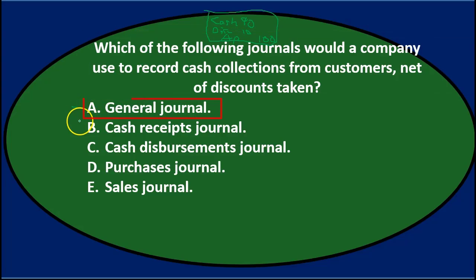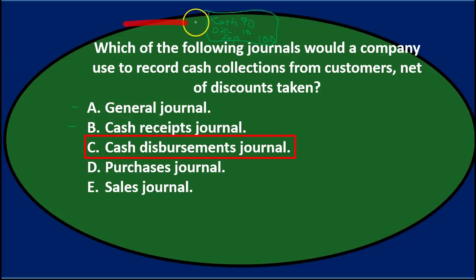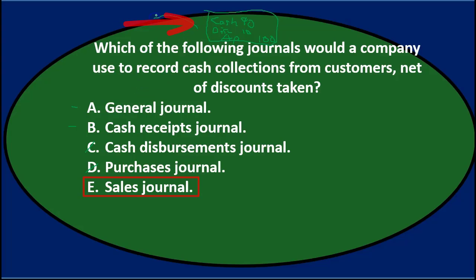A) the general journal — the default if it can't go anywhere else, so I'll keep it for now. B) cash receipts journal — we did receive cash, so that could be the place. C) cash disbursements journal — we didn't disburse cash, we received it, so that's out. D) purchases journal — we're not purchasing, we're getting paid. E) sales journal — the original sale happened prior to this; we're collecting on that prior sale, so it's not that.